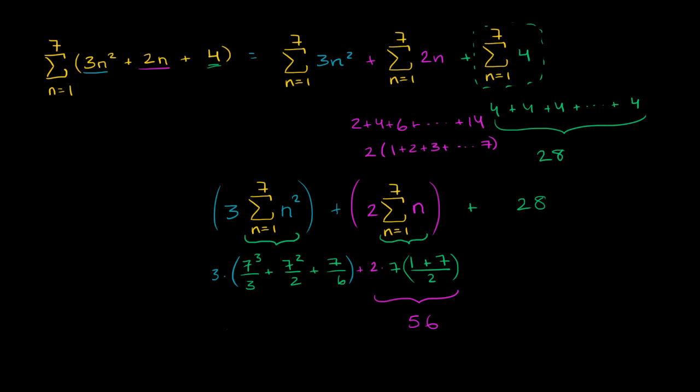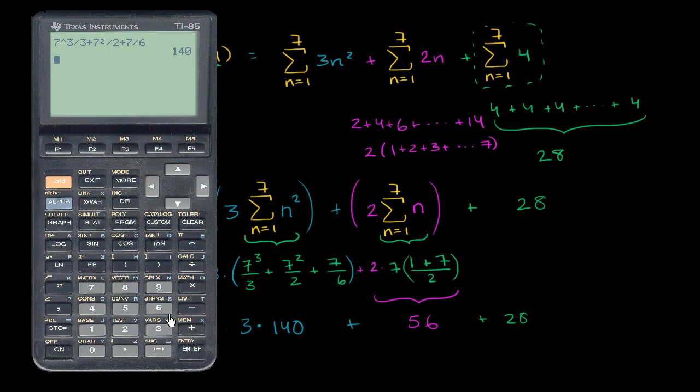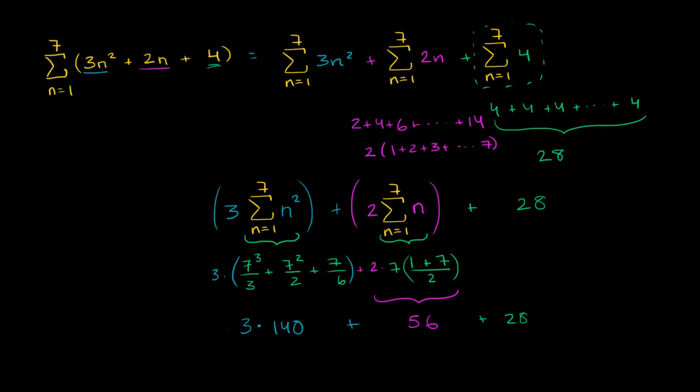3 times 140 plus 56 plus 28. And since we get our calculator out, let's just use it. So 140 times 3, that's the 3 times 140 is 420 of course. So this is going to be equal to 420 plus 56 plus 28. We deserve a drum roll now. Gets us to 504. So this sum right over here is equal to 504.